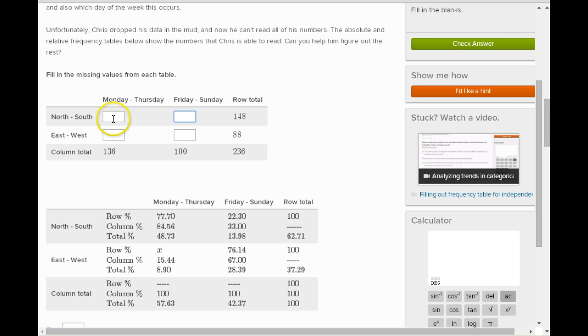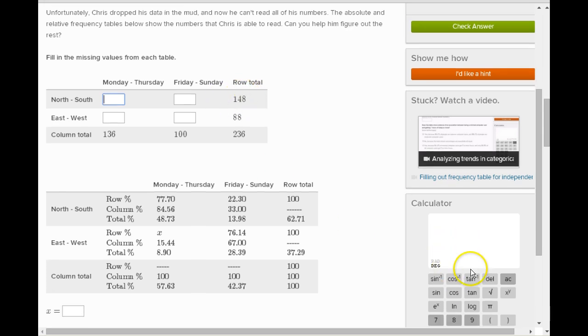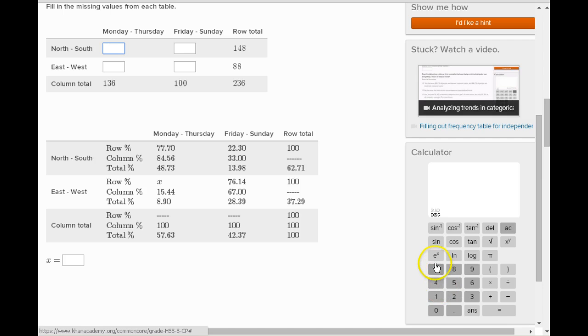So this is a total count, so whatever number goes here and goes there to add up to 148. So the question is how do we find that? Well this is actually pretty easy. We would simply say that if we had 148 total here, north-south, then what we would do is we'd know that 77.7 percent of them go in here and 22.3 percent of them go there. So the question really is what is 77.7 percent of 148.